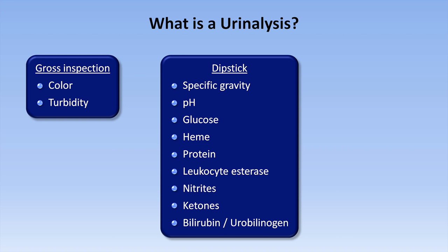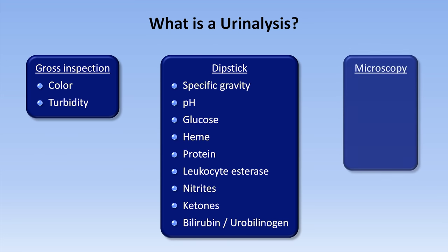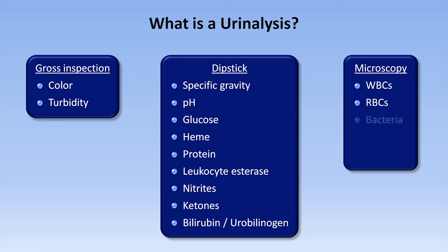The dipstick will be the focus of the second video in this series. The last category, which is usually not performed by the lab unless specifically requested, is urine microscopy. With microscopy, a lab technologist will quantify the numbers of white blood cells and red blood cells and will assess for the presence of bacteria, crystals, and something called casts. I'll be talking about microscopy in the last video, which will also include a summary of how to put all this together in order to use the UA when making diagnoses.